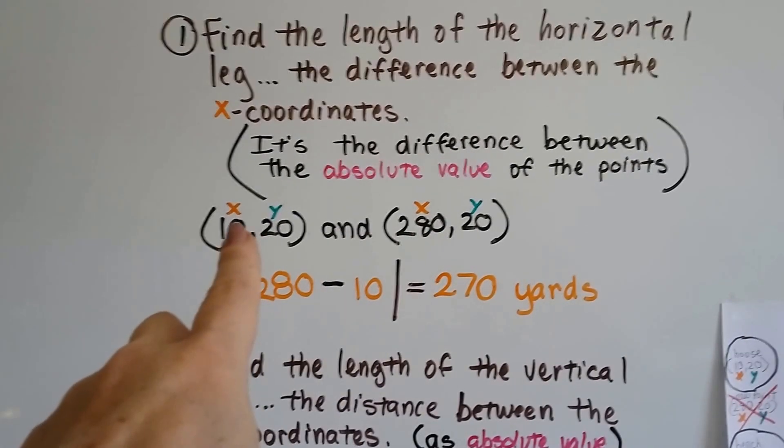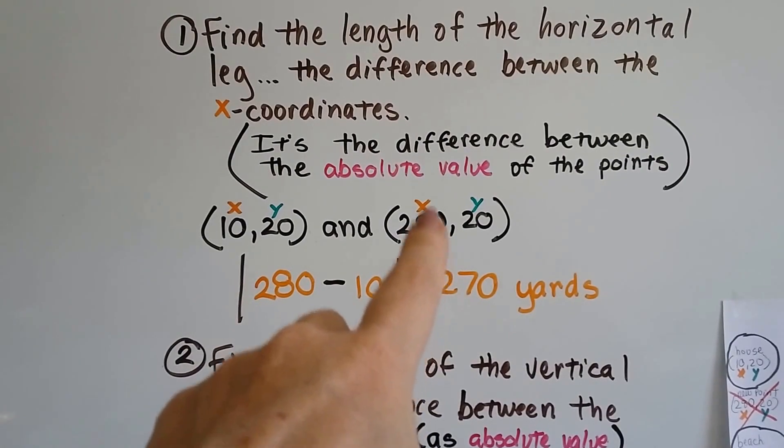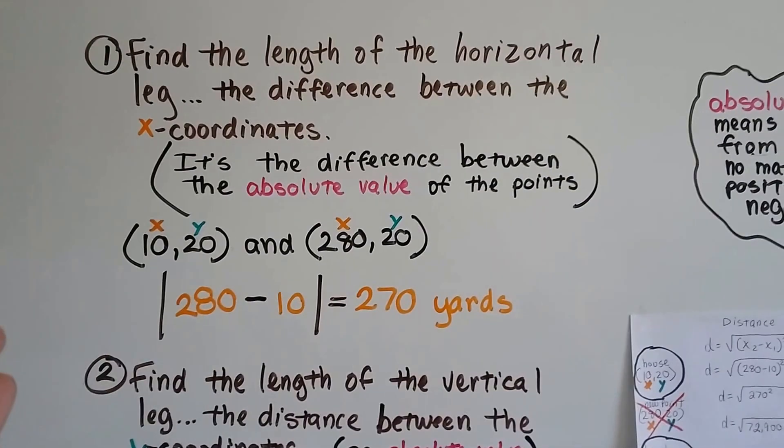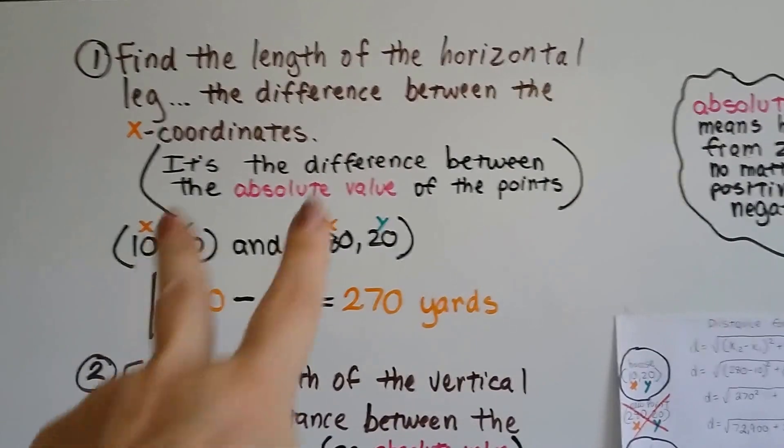So we've got 10 comma 20 and 280 comma 20, and the x are the 10 and the 280. Now, I know the 10 is first.